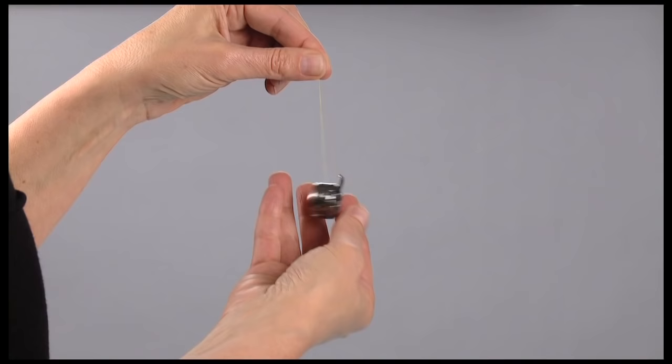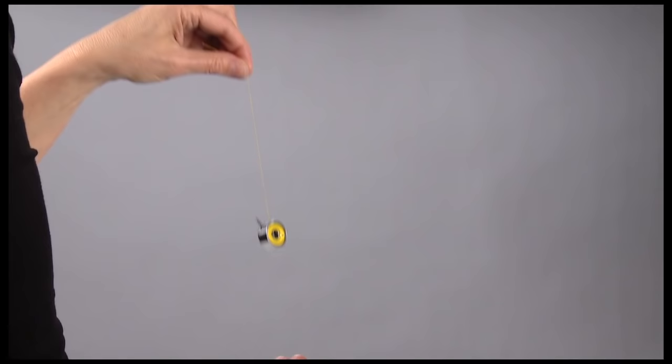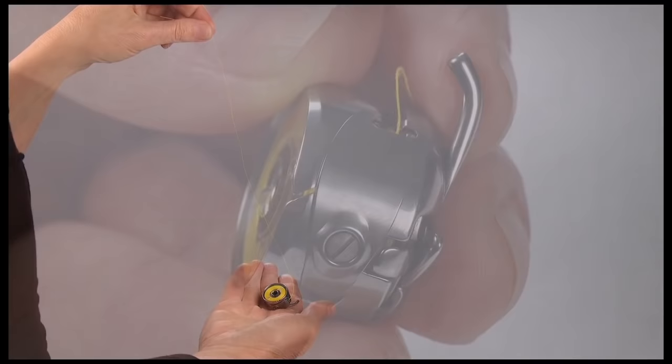If the thread doesn't unwind at all, the tension is set too tightly. If the bobbin case drops too much, the tension is set too loosely.